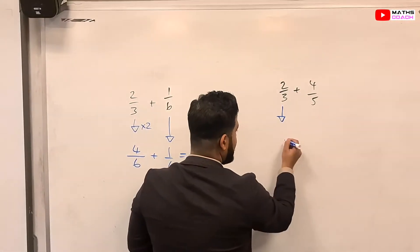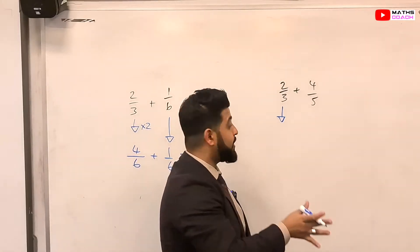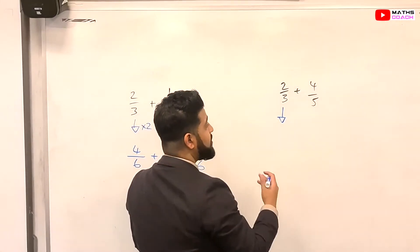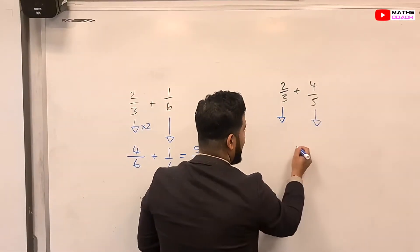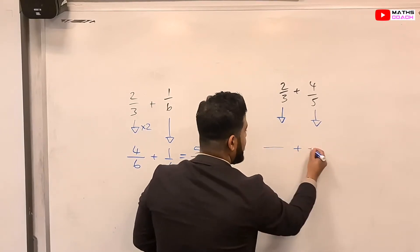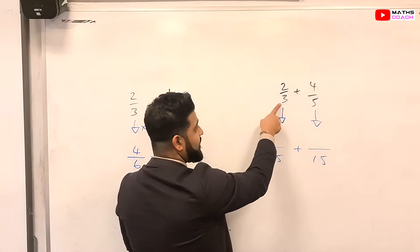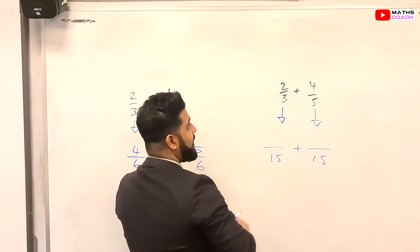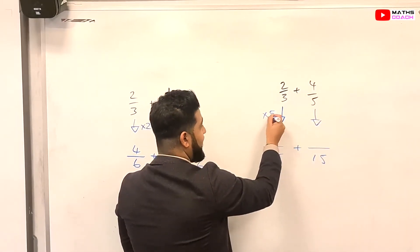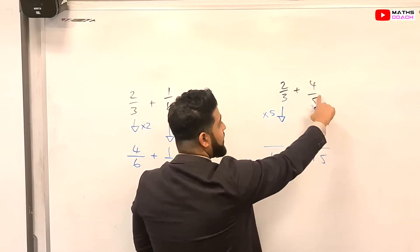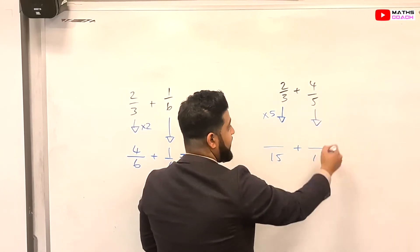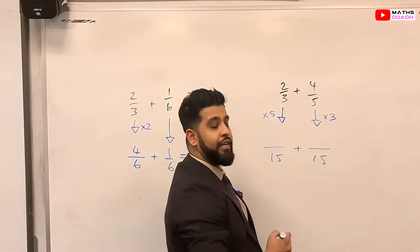So, we know that 15 is the lowest common multiple of both of these numbers. So we now need to figure out how we can have 15 for both of them. Right, so what times 3 gives you 15? If you times this by 5, it gives you 15. What times 5 gives you 15? You can times it by 3 to give you 15.